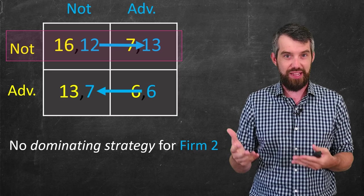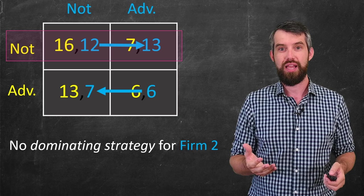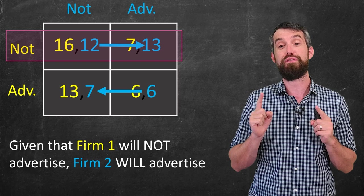they prefer 13 than 12. They would prefer to advertise. And so as a result of this, given that firm one will not advertise, now we know that firm two, that they will advertise.